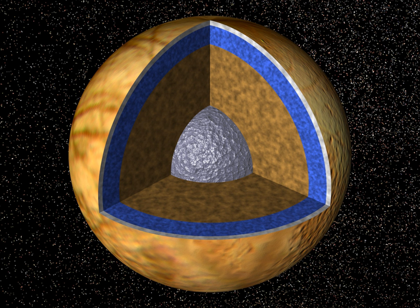Water worlds are of extreme interest to astrobiologists for their potential to develop life and sustain biological activity over geological timescales. The five best established water worlds in the solar system include Europa, Enceladus, Ganymede, and Callisto. A host of other bodies in the outer solar system are inferred by a single type of observation or by theoretical modeling to have subsurface oceans.